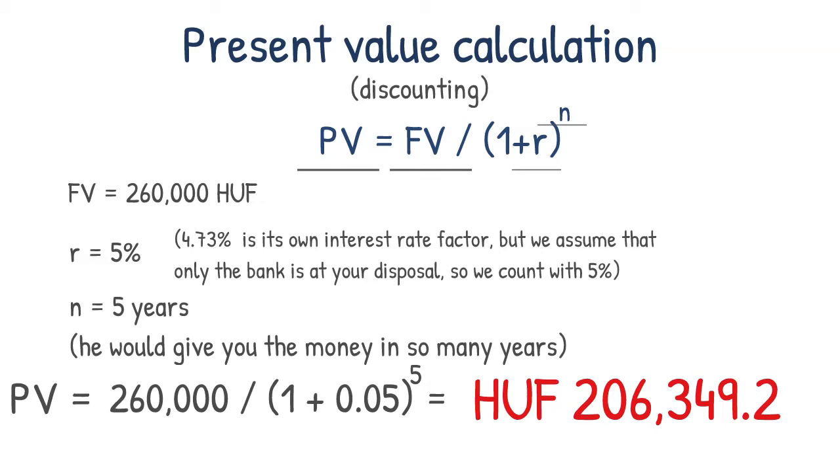In other words, in five years you would have the same 260,000 forends if you put this amount into this bank. You're not much ahead of that, for the answer you need to know if it's more or less than what you can get at the bank.